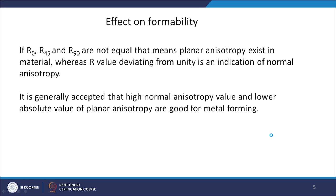For good formability, I need a high normal anisotropy value and a low absolute value of planar anisotropy — these are good for metal forming. When planar anisotropy is high — that is, when R₀, R₄₅, and R₉₀ are not equal — planar anisotropy exists in the material. R value deviating from unity is an indication of normal anisotropy. I need high normal anisotropy and lower planar anisotropy.